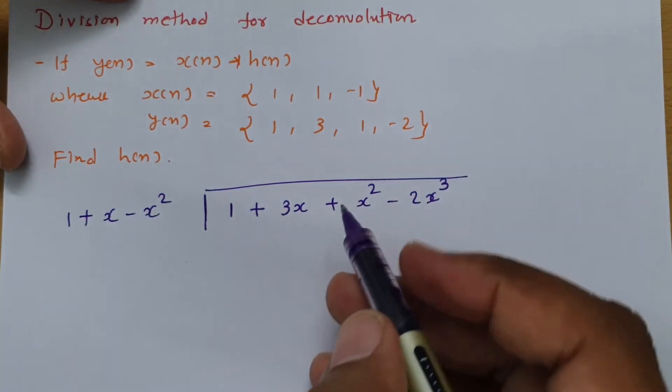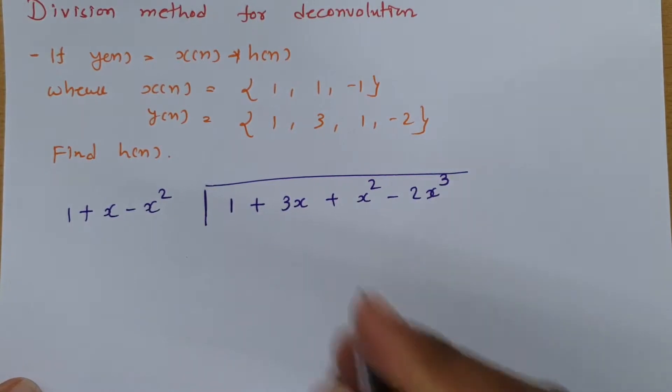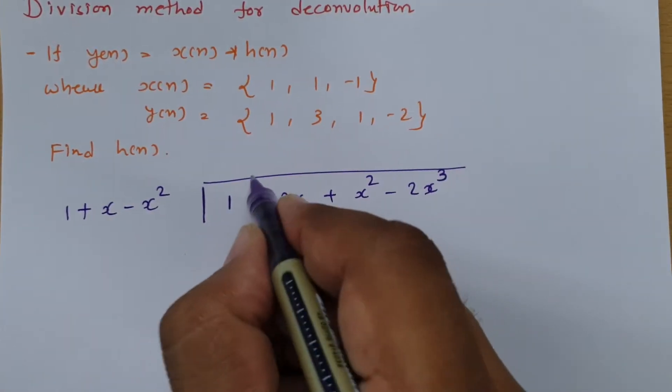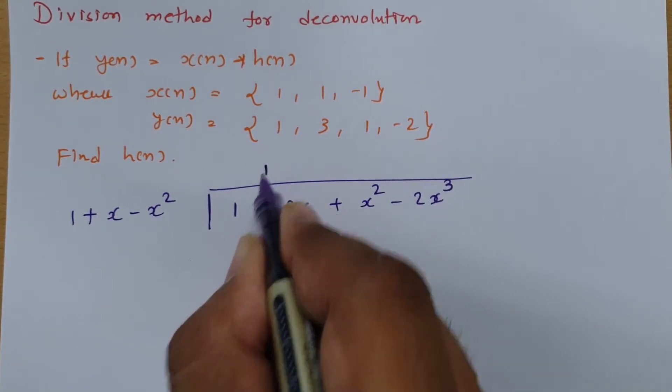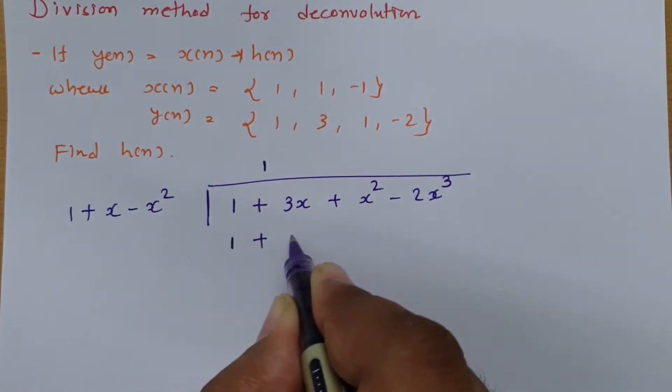Now we need to divide this. First, I take 1 over here and have this value as given.